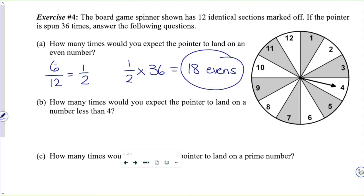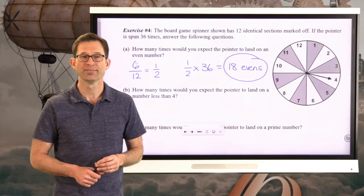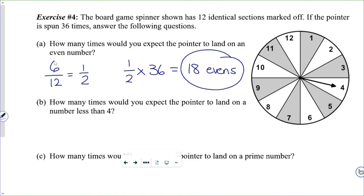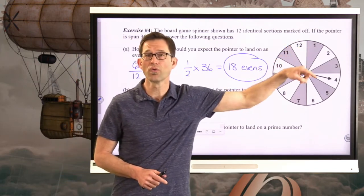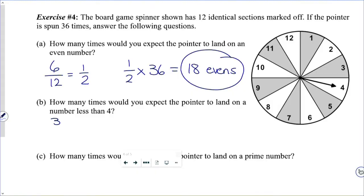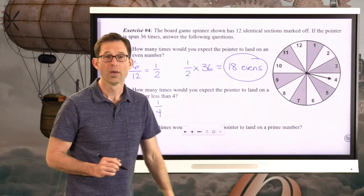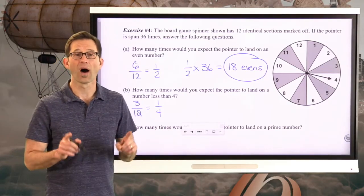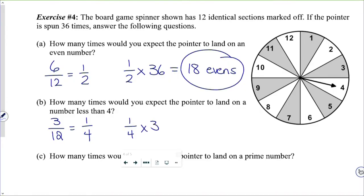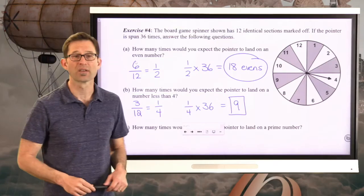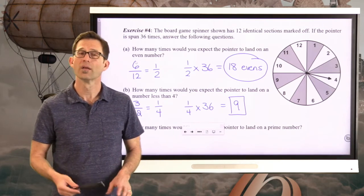Let's take a look at letter B. How many times would you expect the pointer to land on a number less than four? Why don't you go ahead and try to figure that out? Well, how many of these numbers are less than four? That's easy enough. The numbers one, two, three. So the probability that we would get a number less than four would be three twelfths, which, if I reduce, would be one-fourth. Now that tells me that one-fourth of all my spins, I expect to get a number less than four. So if I do now one-fourth times 36, I'll get nine. So nine times I expect to get a number that is less than four.